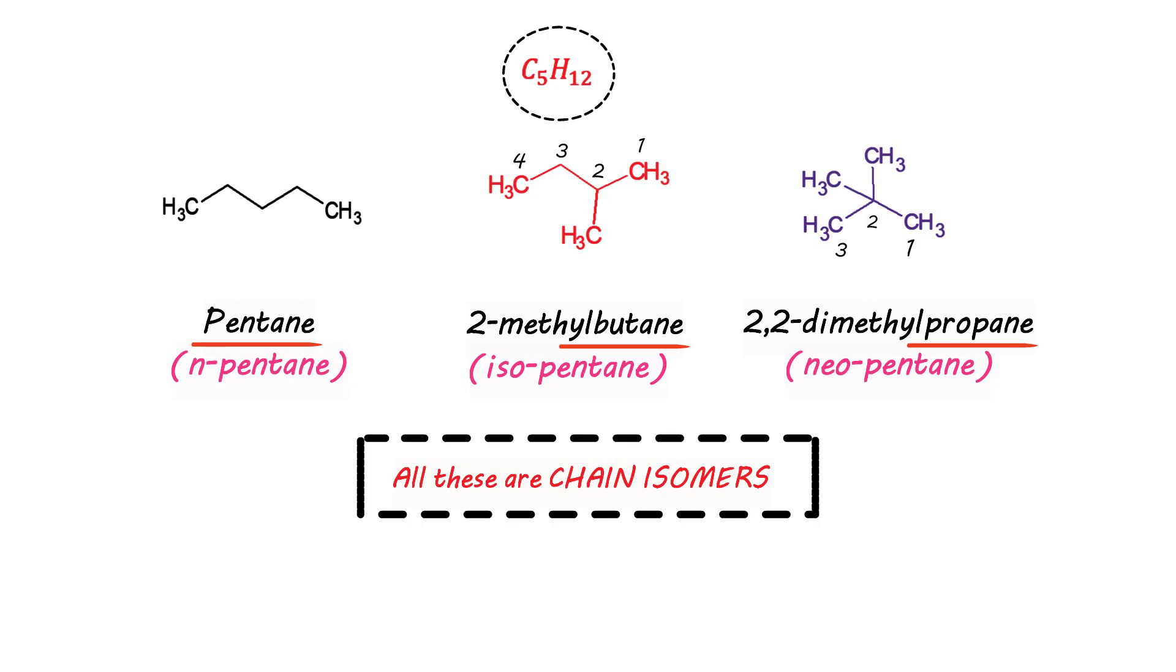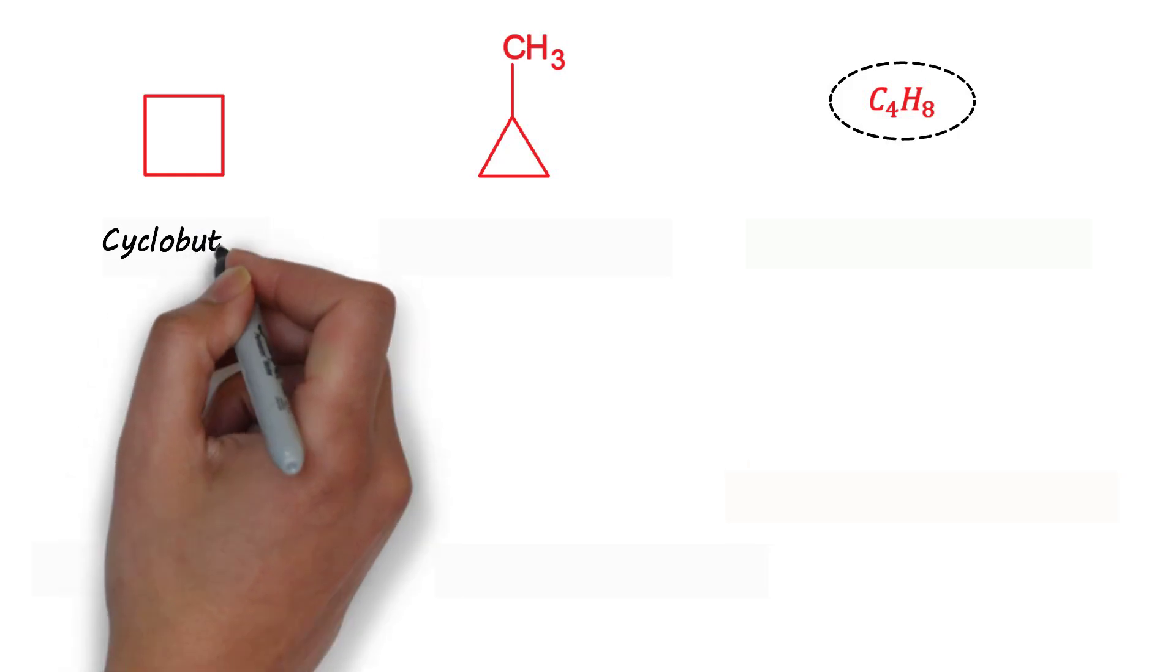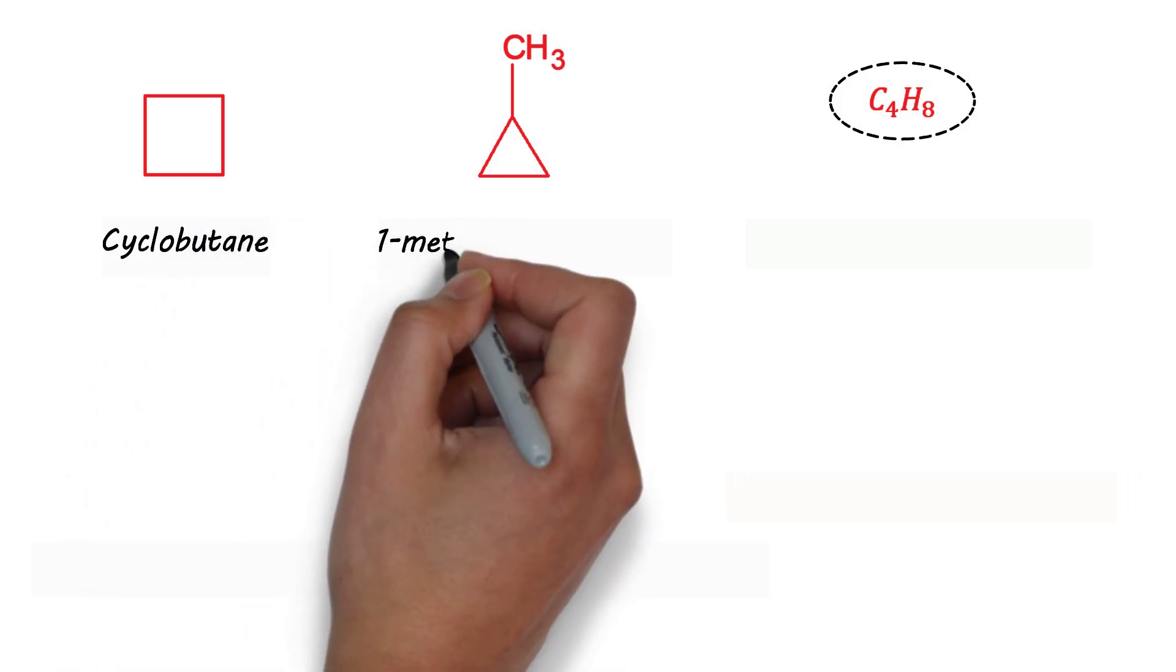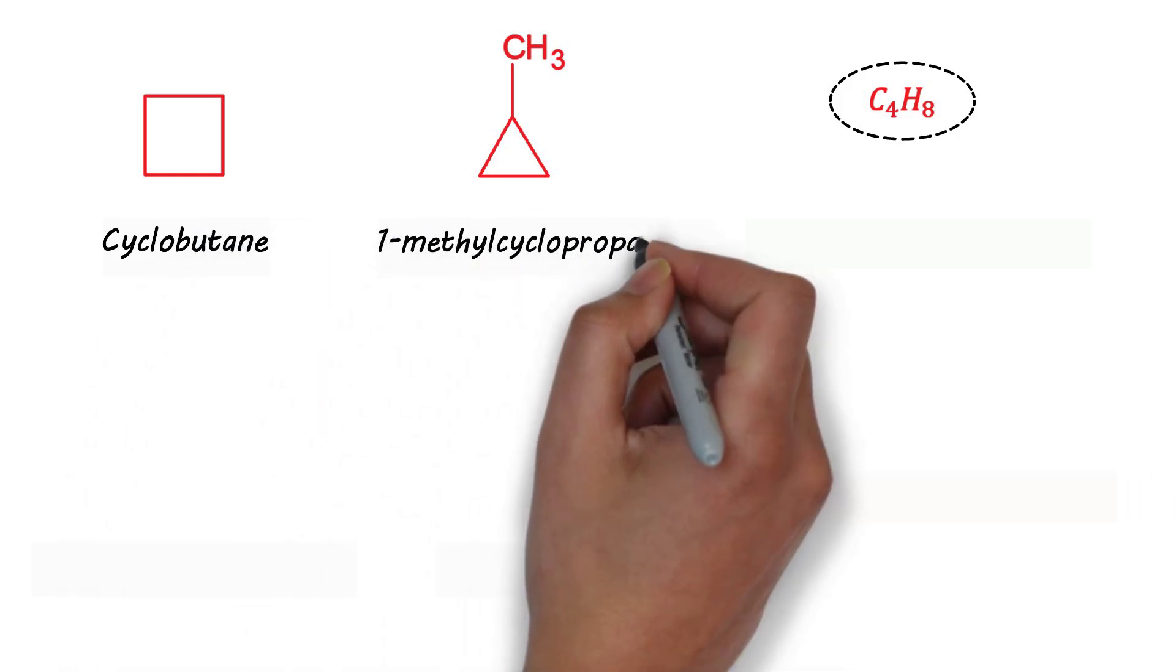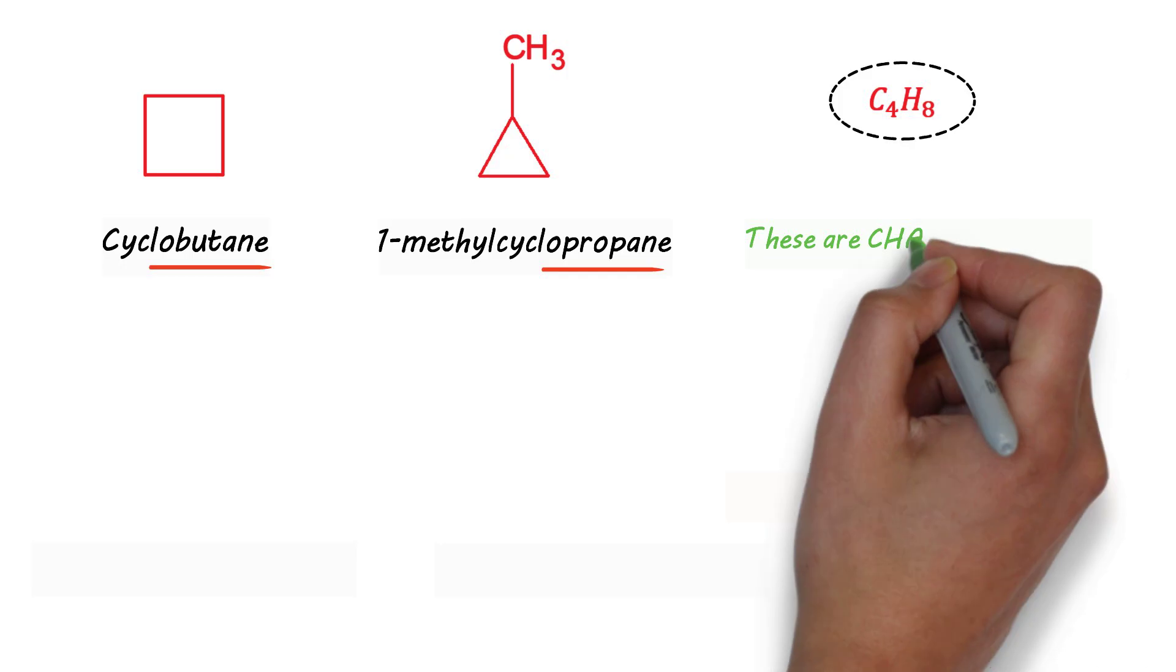In the same way, while looking at cyclic systems you have these two molecules. They have the same molecular formula of C4H8 belonging to cycloalkane family. First molecule is cyclobutane and the next molecule is 1-methylcyclopropane. This indicates that the main chain in first is butane, in the second it is propane. So the main chain differs. The rest of the things are same. So these are also chain isomers.